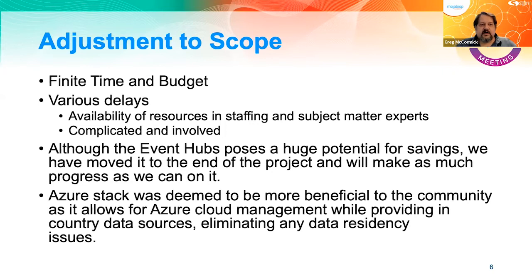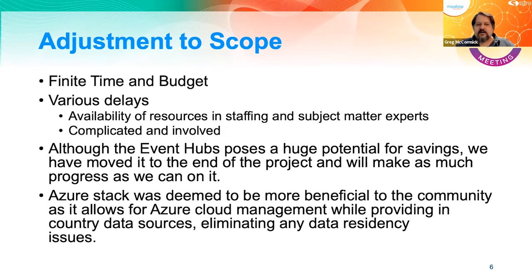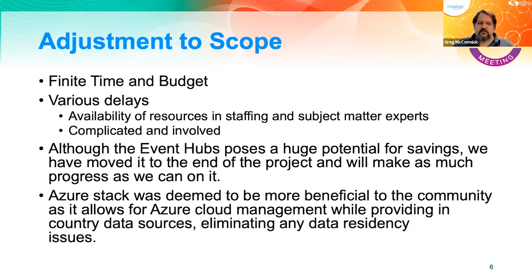Regarding the adjustment to scope: we have a finite amount of time and budget. Resources — both physical and people — have been allocated for a certain period. There have been delays in availability of physical staffing and subject matter experts. In particular with Event Hubs — which we really want because it can add tremendous cost savings — Event Hubs is a messaging system that scales very well within Microsoft and runs affordably, using only the bare minimum you need. It has the Kafka API in front of it, so we don't have to change the codebase.